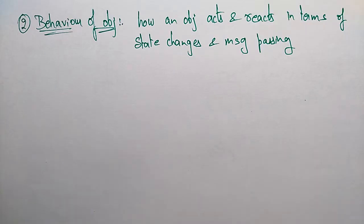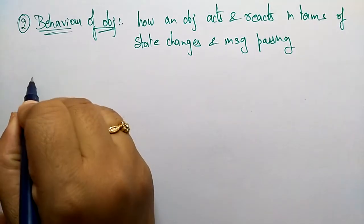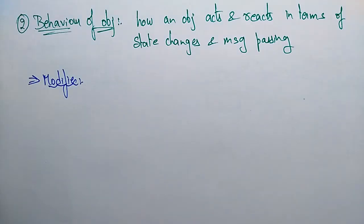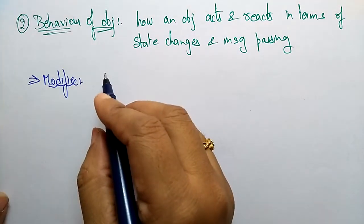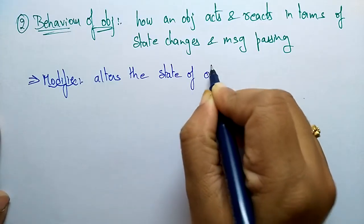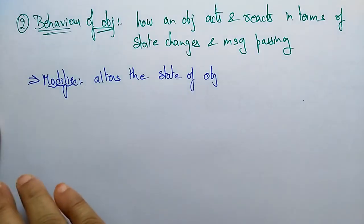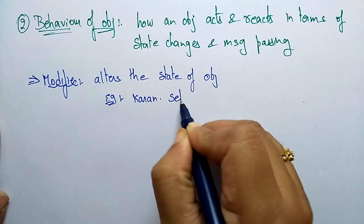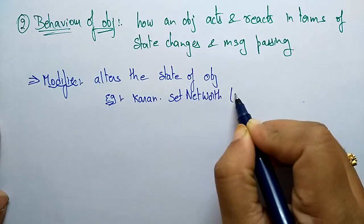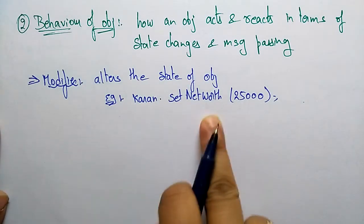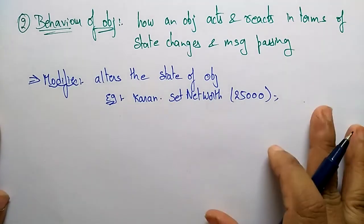There are a few kinds of operations a client may perform on an object. First is a modifier — a modifier alters the state of an object. For example: current.setNetWorth(25000) — here the value is being changed, altering the state of an object. That is called a modifier.